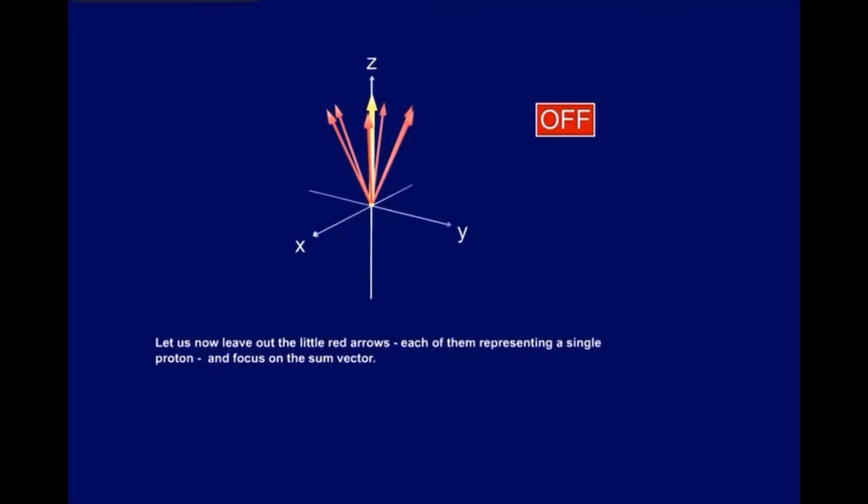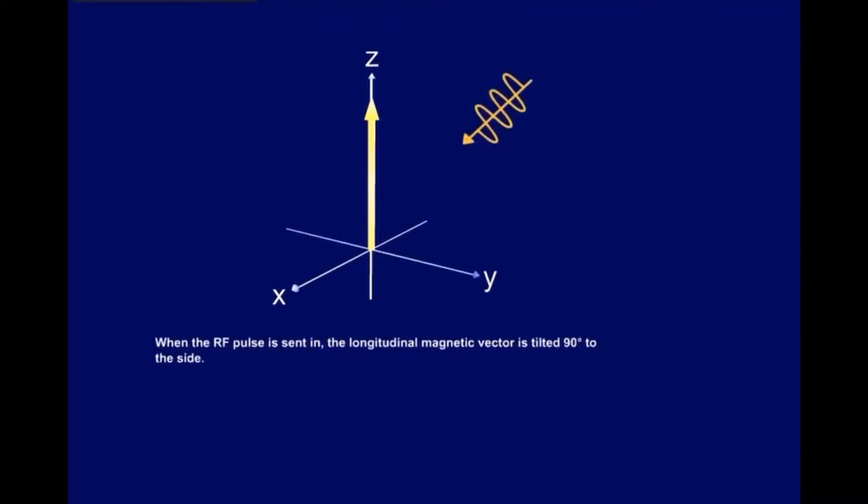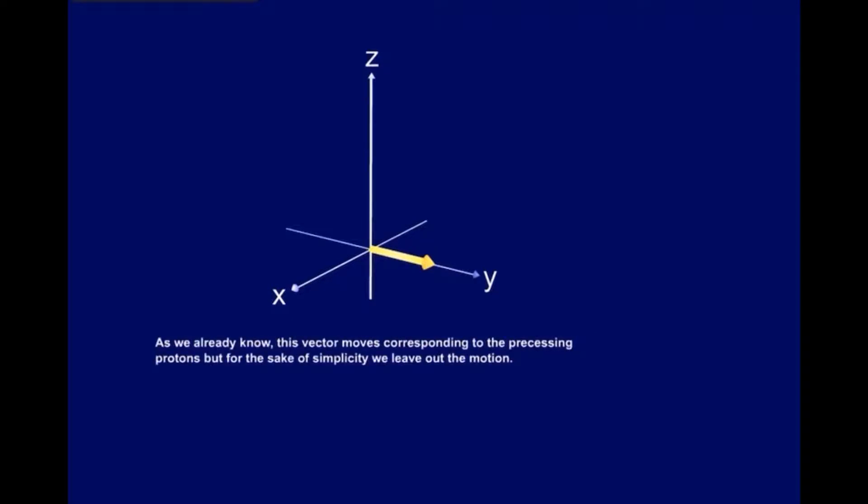Let us now leave out the little red arrows, each of them representing a single proton, and focus on the sum vector. When the RF pulse is sent in, the longitudinal magnetic vector is tilted 90 degrees to the side. As we already know, this vector moves corresponding to the processing protons, but for the sake of simplicity, we'll leave out the motion.